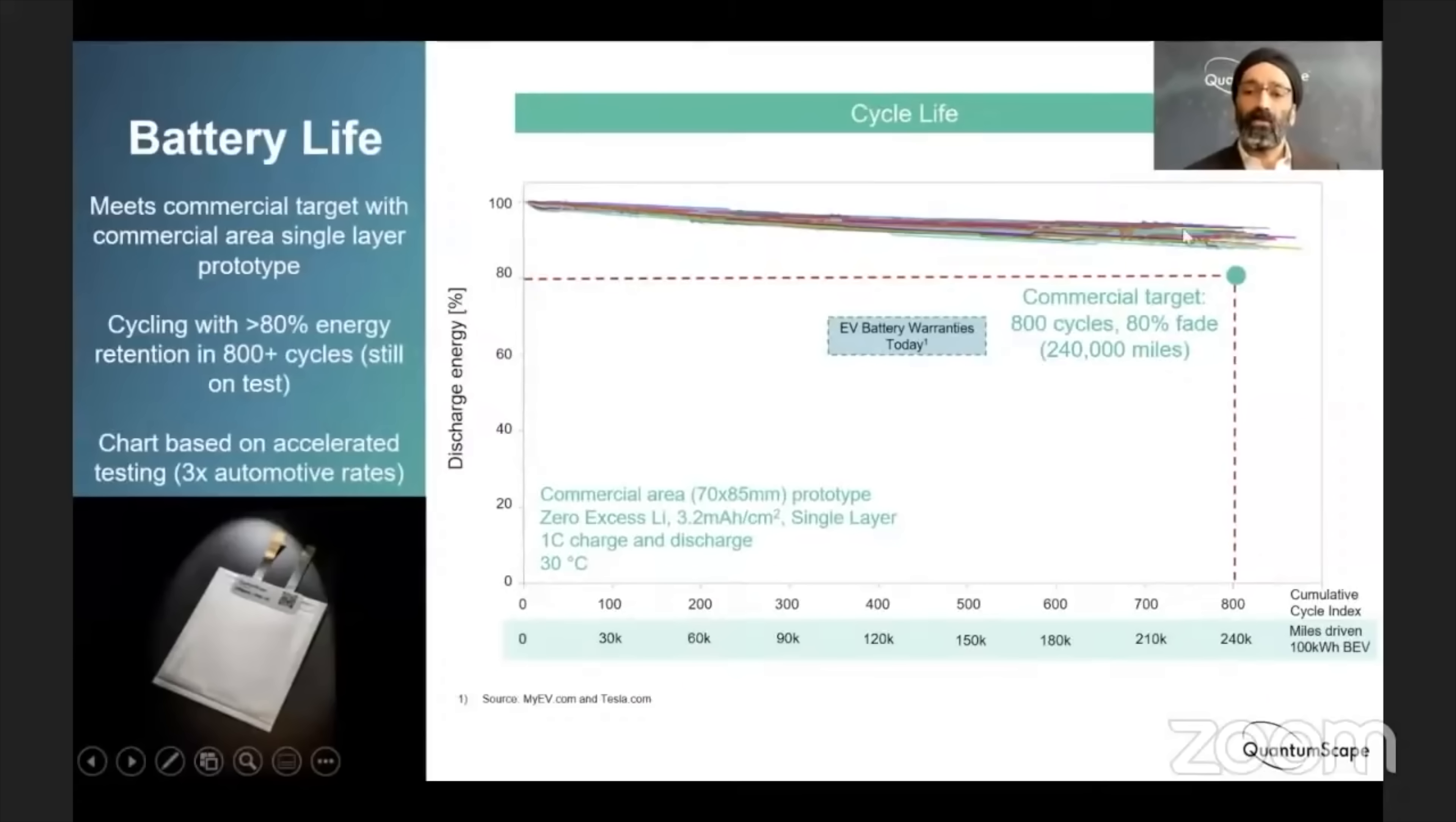Of course, we should also look at battery life, which has been another big problem for solid-state batteries to date. QuantumScape says it's been testing its cells through more than eight hundred charge discharge cycles and is continuing to test them now, and those cells have managed to retain eighty percent of their original capacity over time. Something it says is equivalent to two hundred and forty thousand miles traveled in a theoretical electric car fitted with a one hundred kilowatt hour QuantumScape pack.